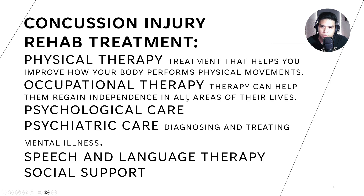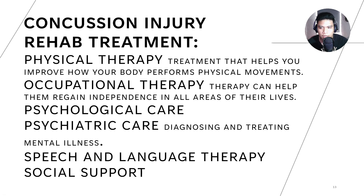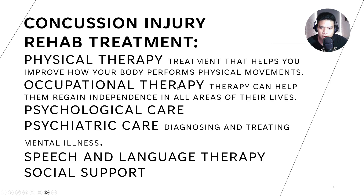Another treatment is physical therapy — the most common treatment for these injuries, especially severe ones. Physical therapy helps improve how your body performs through movements and exercises. Occupational therapy helps regain independence in all areas of life — helping those who are emotionally and physically affected. Another is psychological care, including psychiatric care for diagnosing and treating mental illness in severe cases of traumatic brain injury.